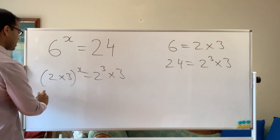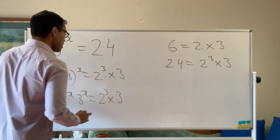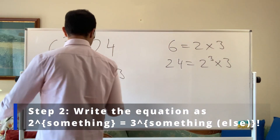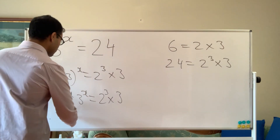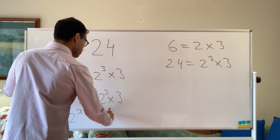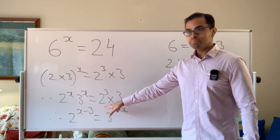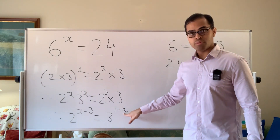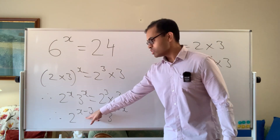Now that we know that's 2 cubed times 3, we get 2 to the power x times 3 to the power x equals 2 cubed times 3. What we want to do is put all the exponents of one number to one side and the other number to the other side. We've got 2 to the power x and 2 to the power 3, so I'm going to divide both sides by 2 cubed — that's multiplying by 2 to the power negative 3 — giving us 2 to the power (x minus 3) equals 3 to the power (1 minus x).